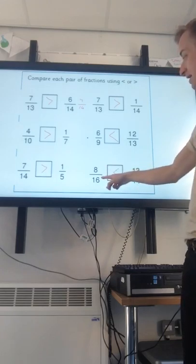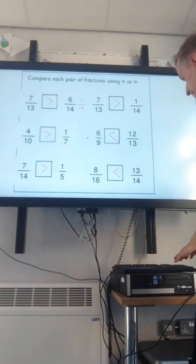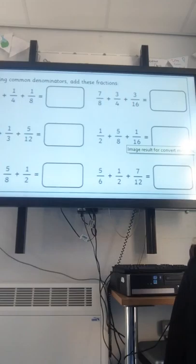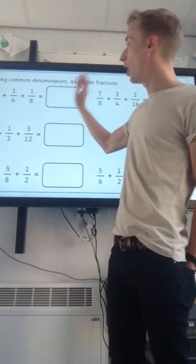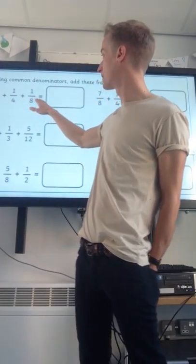7 fourteenths, well, we already, actually, that was the same as a half. We've only got 1 fifth there. So that was bigger there. And then finally over here, 13 out of 14. 13 fourteenths is definitely bigger than 8 sixteenths, which is equal to a half. Half of 16 is 8. There you go.